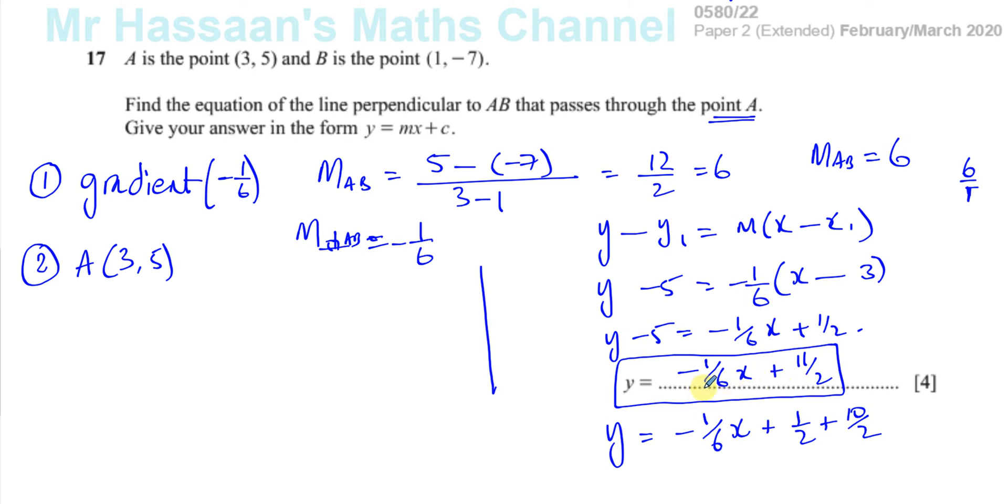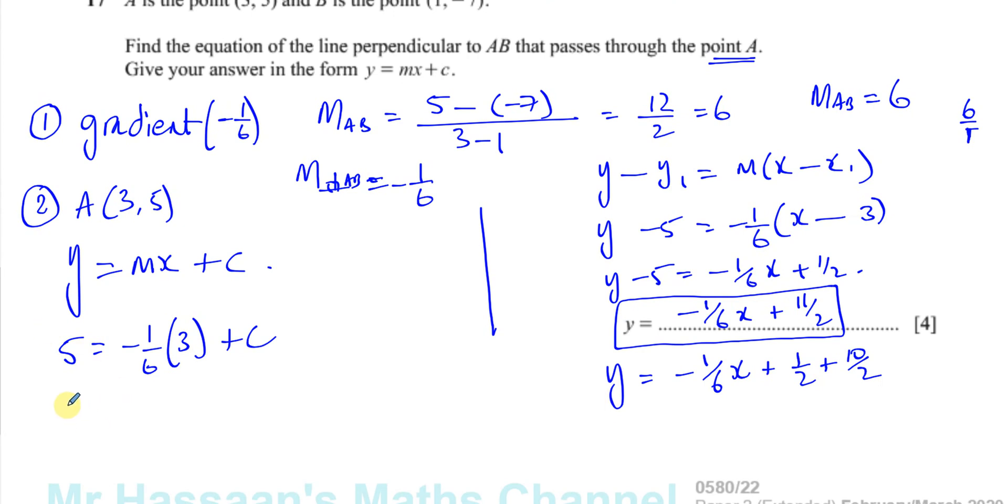Alternatively we could use Y equals MX plus C. And then we could say okay this is Y, this is X and this is M. So 5 equals M which is minus 1 sixth times X which is 3 plus C. So C is going to be 5 plus a half basically, because this is going to be minus a half. So you have 5 plus a half equals C. So that means C equals 10 over 2 plus 1 over 2 which is 11 over 2, which gives us the same answer.